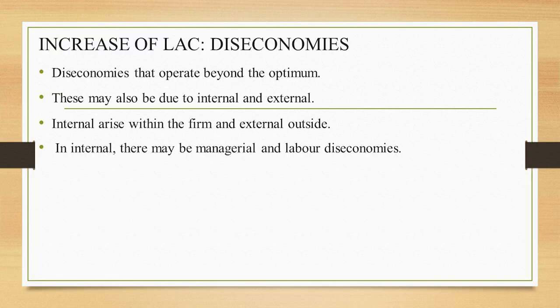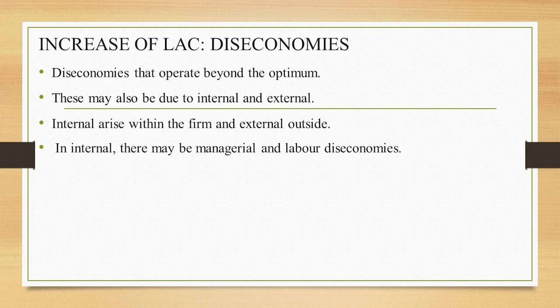When there are economies the long-run average cost curve falls down, and when there are diseconomies it starts rising. There is a point of optimum — the output level where you get maximum economies, meaning cost is lowest and profit is highest. However, because of business and expansion requirements, production is expanded beyond that point. Once it goes up, diseconomies start taking place, which may again be due to internal and external factors.